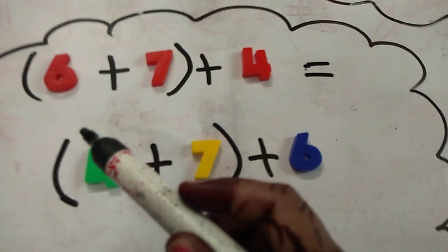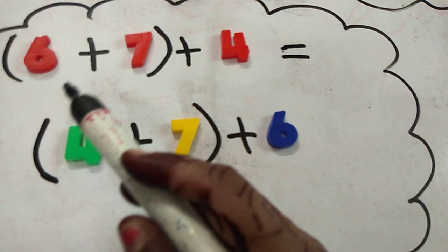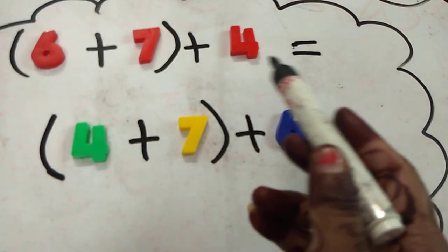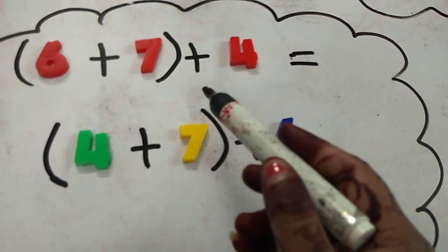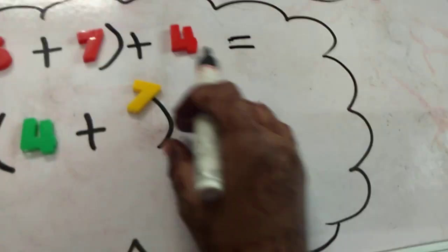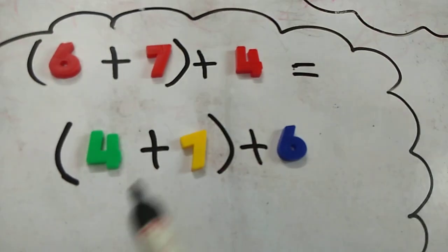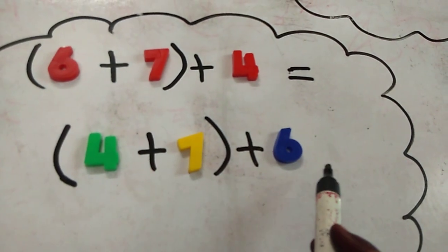Now, this property, it doesn't matter while we are regrouping the addends. 6 plus 7 plus 4, that will be equal to 4 plus 7 plus 6.